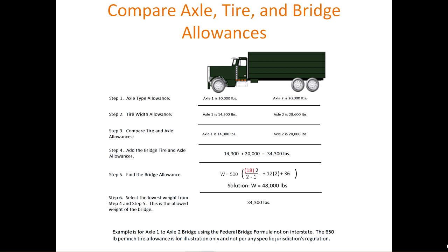We find the total allowance by comparing axle, tire, and bridge allowances. Step one is to find the axle type allowance: for axle one it's 20,000 pounds, and for axle two it's 20,000 pounds. In step two, we find the tire width allowance: for axle one it's 14,300 pounds; for axle two it's 28,600 pounds, because there are four tires on that axle. In step three, we compare the tire and axle allowances and take the least: for axle one it's 14,300 pounds, and for axle two it's 20,000 pounds.